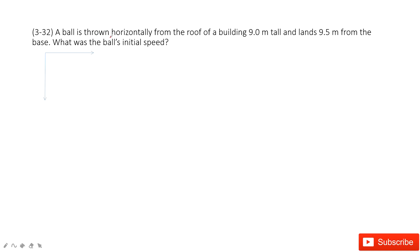We can see the problem tells us a ball is thrown horizontally from the roof of a building 9 meters tall and lands 9.5 meters from the base. It asks you for the initial speed.